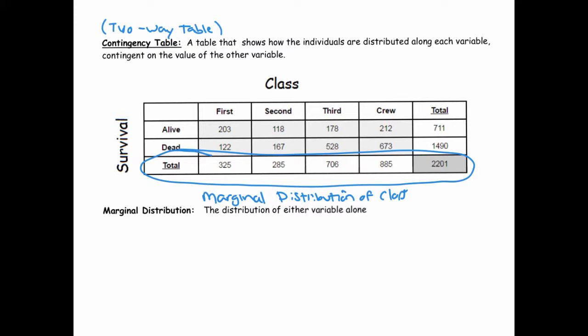However, if I look over at the right margin at this column, I have all the information about how the counts broke down in terms of survival. So I see 711 people survived and 1490 did not, making up a total of 2201. So this would be called the marginal distribution of survival. The marginal distribution of class is the bottom row, and the marginal distribution of survival is the right column.